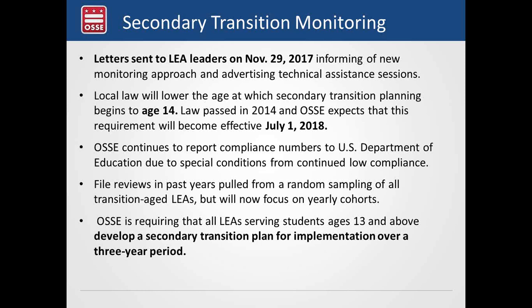Secondary transition planning requirements currently apply to students ages 16 and older. That will change to age 14 because of a law that was passed a few years ago but has not yet gone into effect. OSSE fully expects the new age for secondary transition planning — age 14 — will go into effect this coming July. For several years, OSSE has been under special conditions, meaning we have to do extra compliance reviews and reporting to the US Department of Education because we have historically had very low compliance numbers for secondary transition planning requirements for students with disabilities.